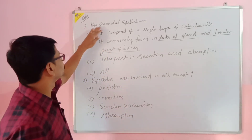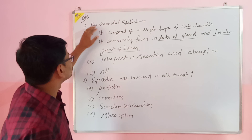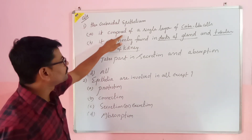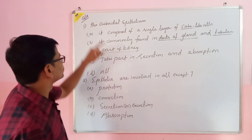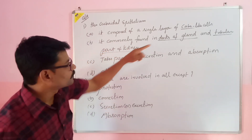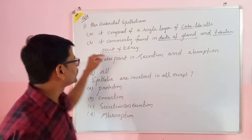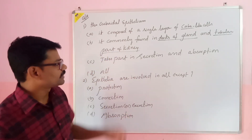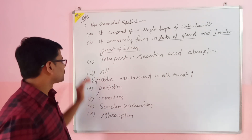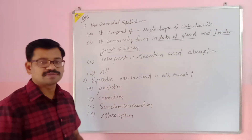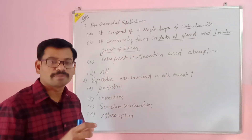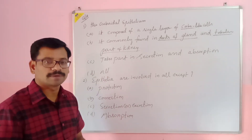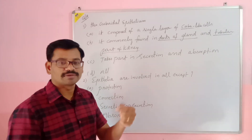First question: What is cuboidal epithelium and what are its characters? Option A: it is composed of a single layer of cube-like cells. Option B: it is commonly found in ducts of glands and the tubular part of the kidney. Option C: it takes part in secretion and absorption. Option D: all of the above. Find the answer and write it in the comment box.